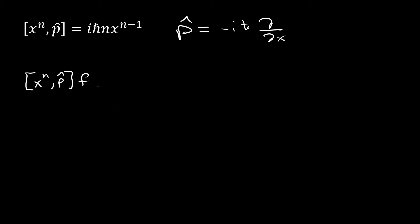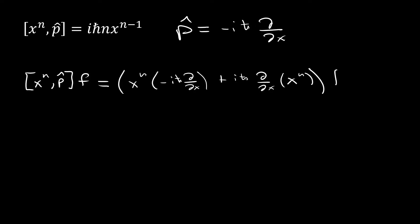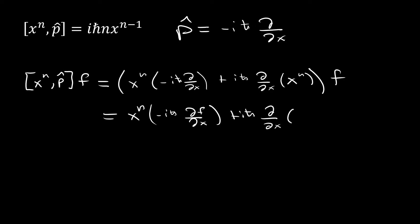We're going to expand this out. When we do that we get x^n times negative i·h-bar partial over partial x, plus i·h-bar partial over partial x times x^n, all applied to our arbitrary function f. Now let's bring f in and multiply through, giving us x^n times negative i·h-bar times partial f over partial x, plus i·h-bar times partial over partial x of x^n·f. We're going to have to apply the product rule here.